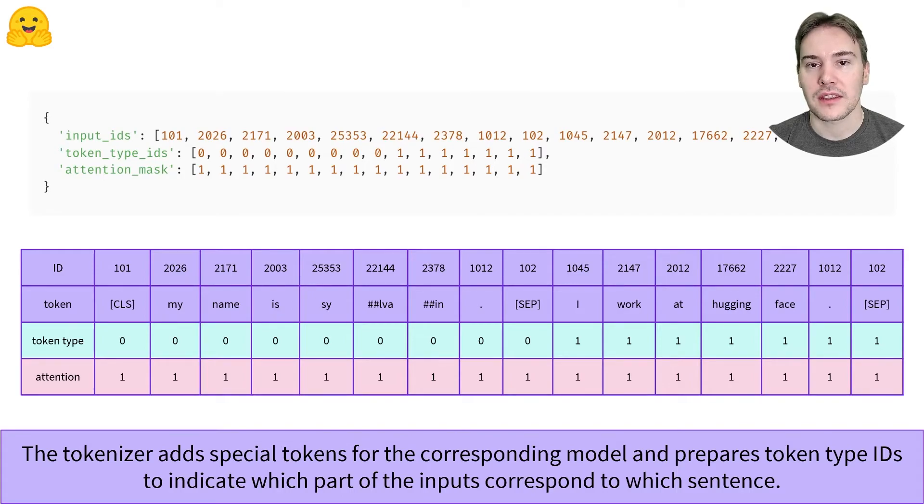We can see the tokenizer also added special tokens, so we have a CLS token, the tokens from the first sentence, a SEP token, the tokens from the second sentence, and a final SEP token.